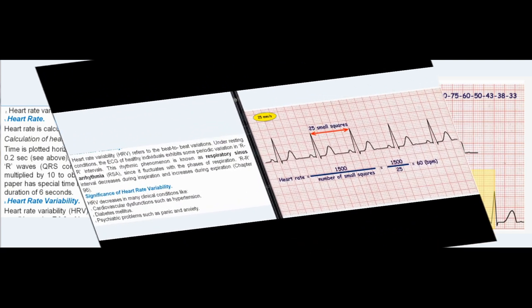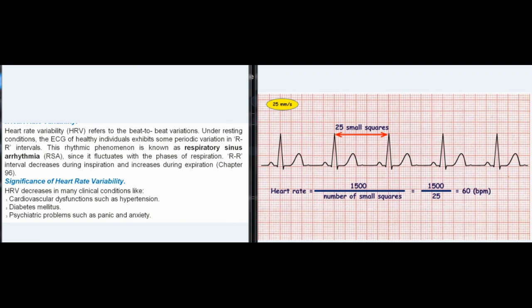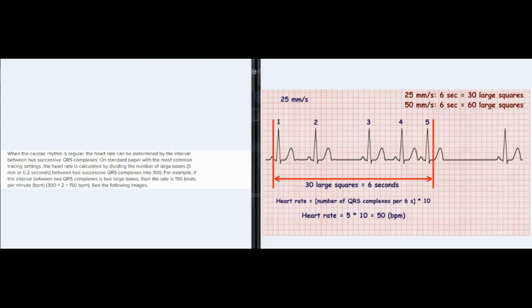Heart Rate Variability (HRV): HRV refers to beat-to-beat variations. Under resting conditions, the ECG of healthy individuals exhibits periodic variation in R-R intervals. This rhythmic phenomenon is known as respiratory sinus arrhythmia (RSA), since it fluctuates with the phases of respiration — R-R interval decreases during inspiration and increases during expiration (Chapter 96). Significance: HRV decreases in many clinical conditions like cardiovascular dysfunctions such as hypertension, diabetes mellitus, and psychiatric problems such as panic and anxiety.